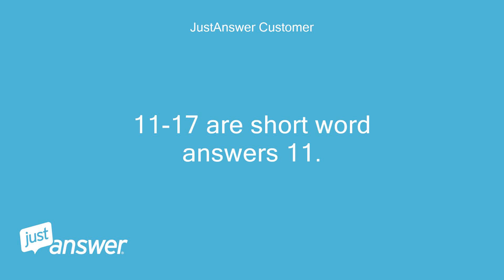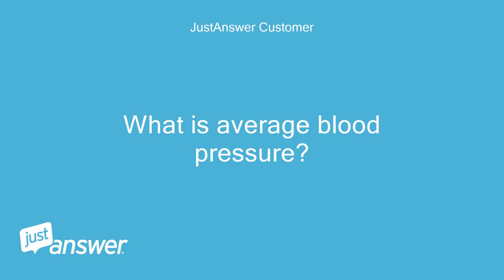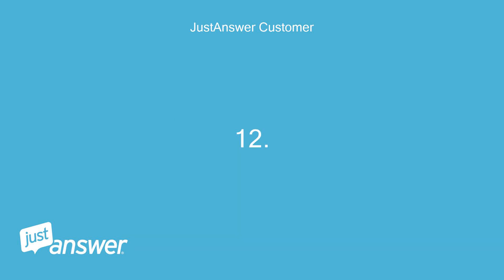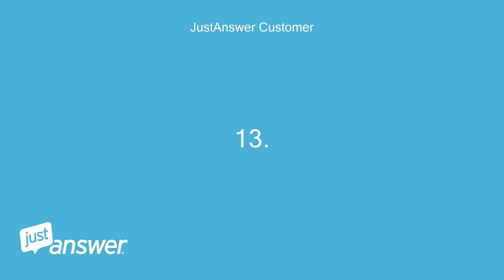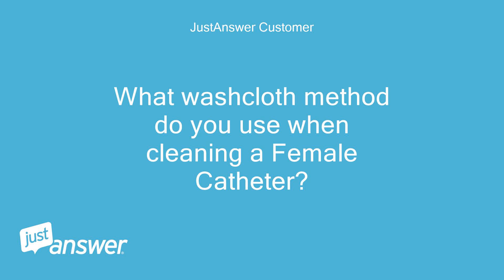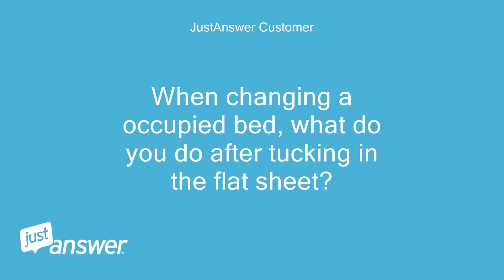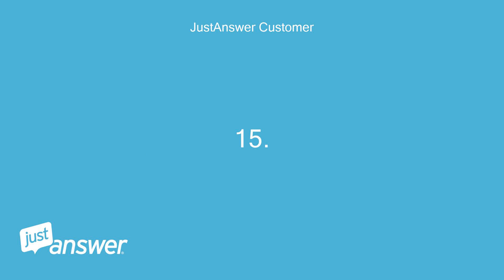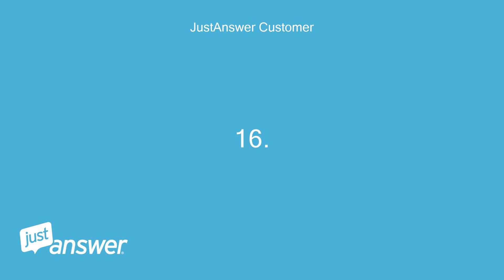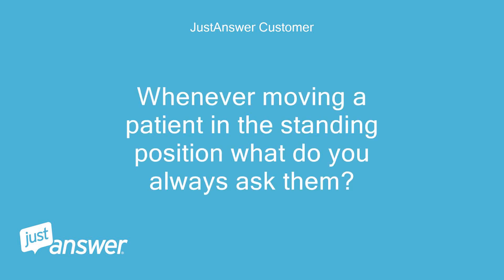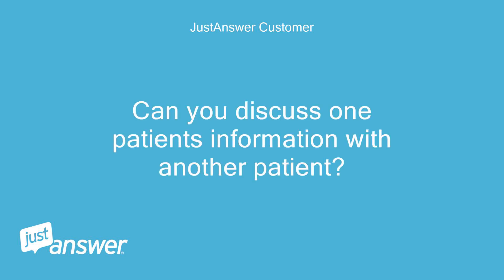Questions 11-17 are short word answers. 11: What is average blood pressure? 12: When performing the bedpan skill, what do you do after placing a chuck pad under the patient? 13: What washcloth method do you use when cleaning a female catheter? 14: When changing an occupied bed, what do you do after tucking in the flat sheet? 15: When performing the blood pressure skill, when deflating the cuff, what will signal the systolic pressure? 16: Whenever moving a patient in the standing position, what do you always ask them? 17: Can you discuss one patient's information with another patient?